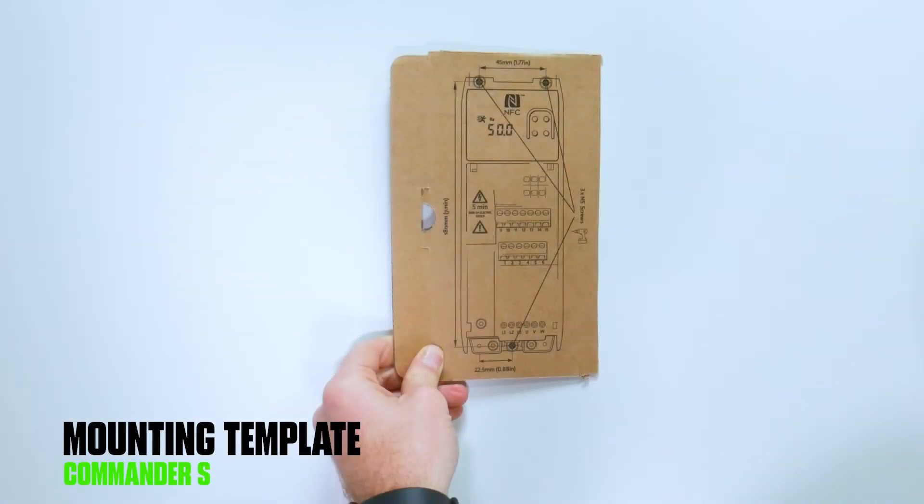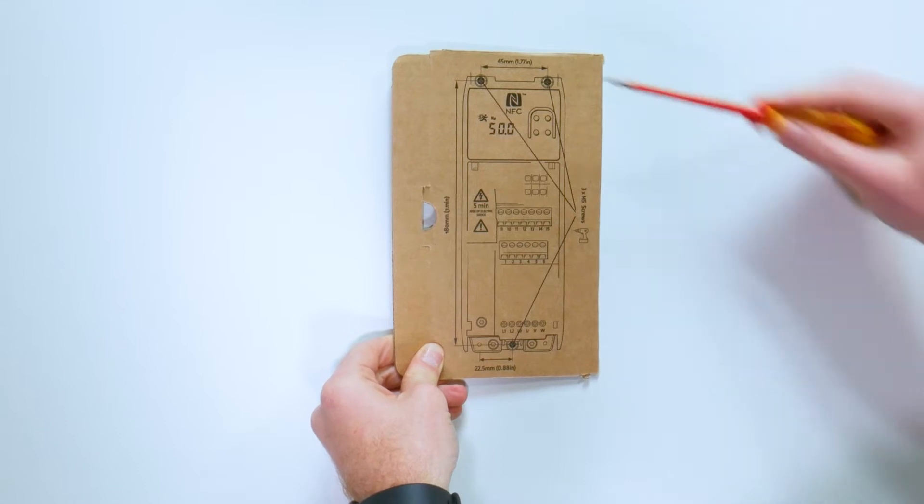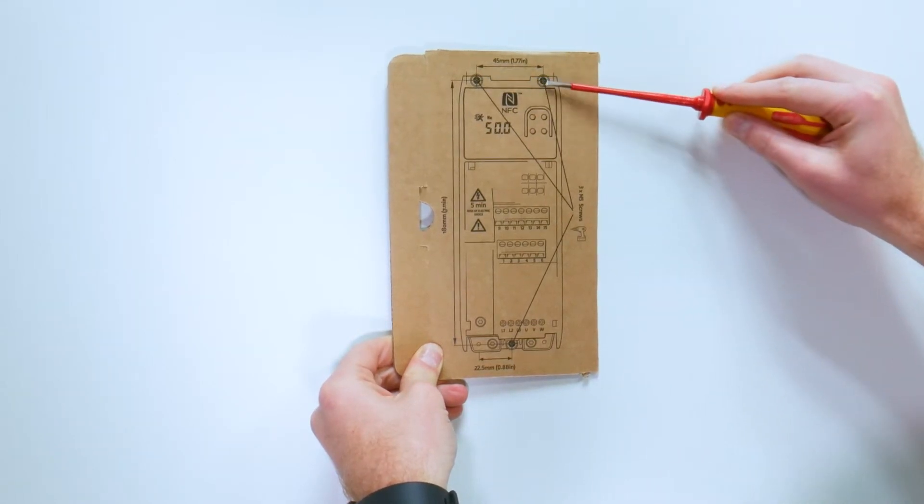When setting up a drive, the first step is to mount the drive. Install the drive on the backplate by using the template as a guide.